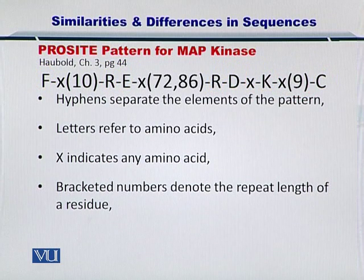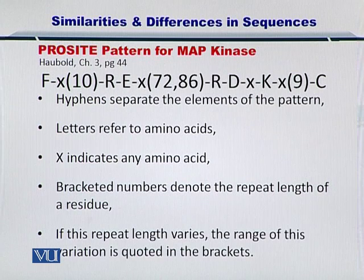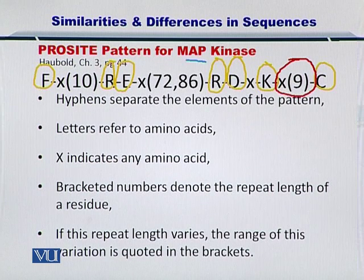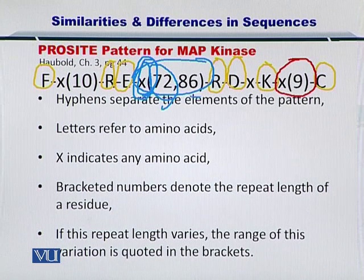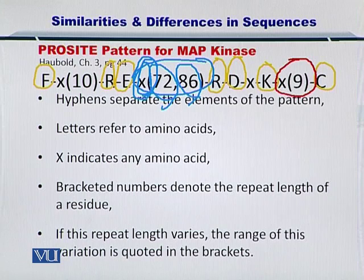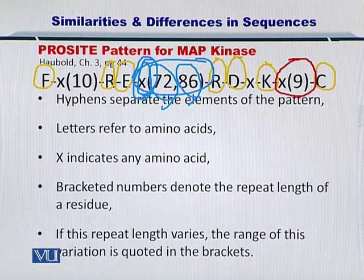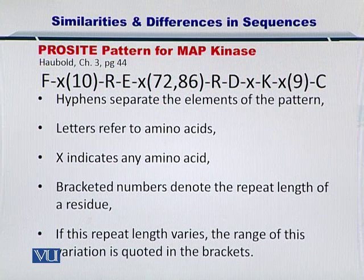However, there may be a situation where the repeat length is variable, and in that case the variation is represented with a range — for example, any amino acid X may occur 72 to 86 times. That is how you represent the ProSite pattern for MAP kinase protein. MAP kinase is a very important protein: it phosphorylates many proteins and is responsible for mitosis and apoptosis in cellular behavior. Using such ProSite patterns, you can represent sequences of interest.